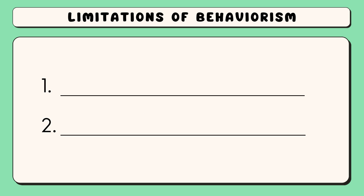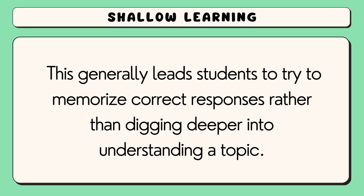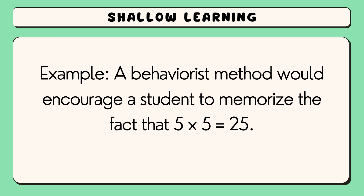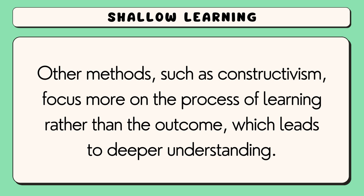Despite these benefits, there are clear downsides of behaviourism. First, shallow learning. At its core, behaviourism incentivises the correct response to a question, which generally leads students to try to memorise correct responses rather than digging deeper into understanding a topic. For example, a behaviourist method would encourage a student to memorise the fact that 5 times 5 equals 25, but this doesn't necessarily mean the student actually knows why 5 times 5 comes to 25. Other methods, such as constructivism, focus more on the process of learning rather than the outcome, which leads to deeper understanding.